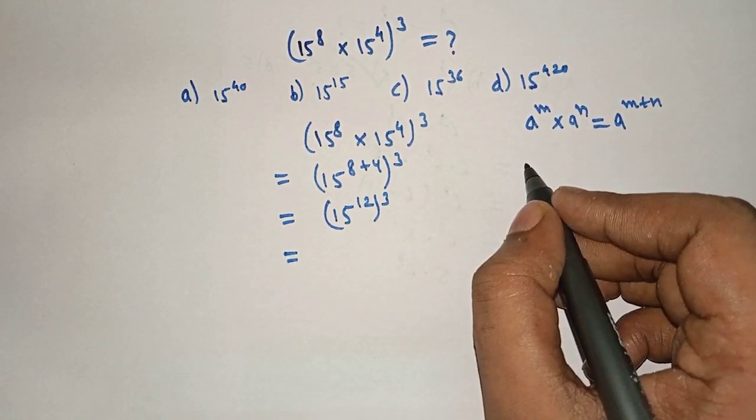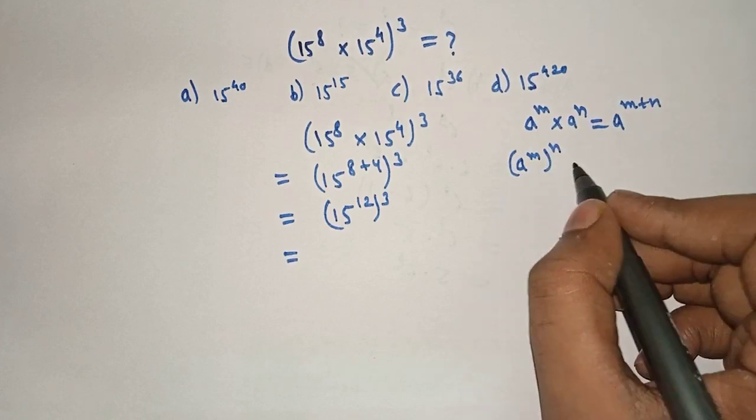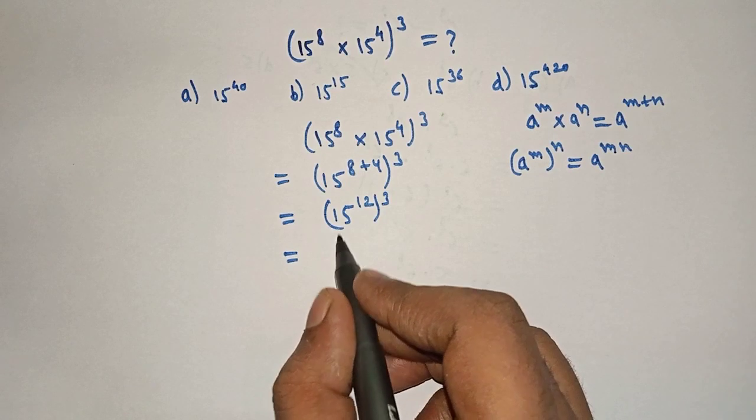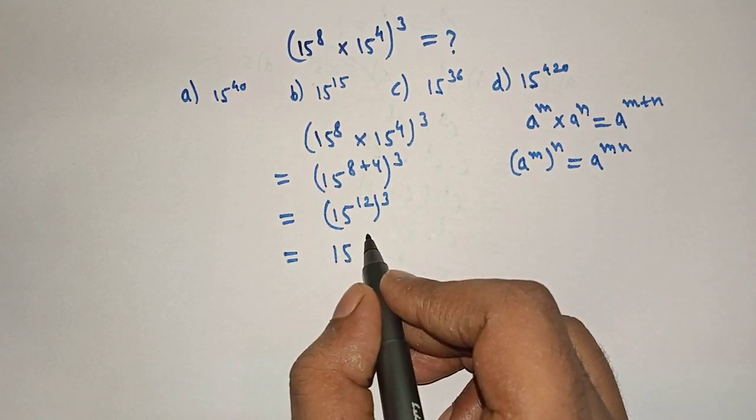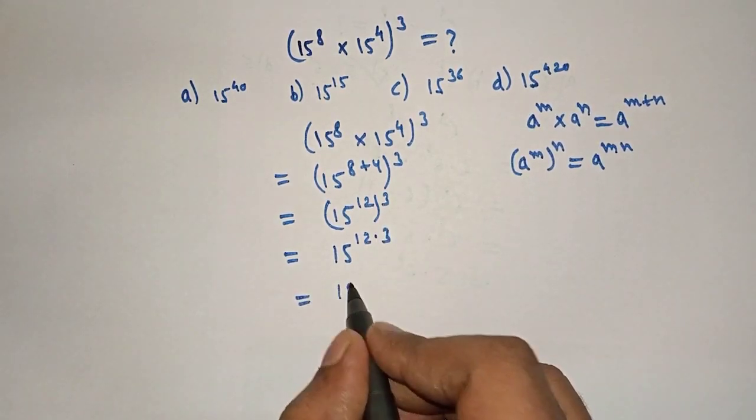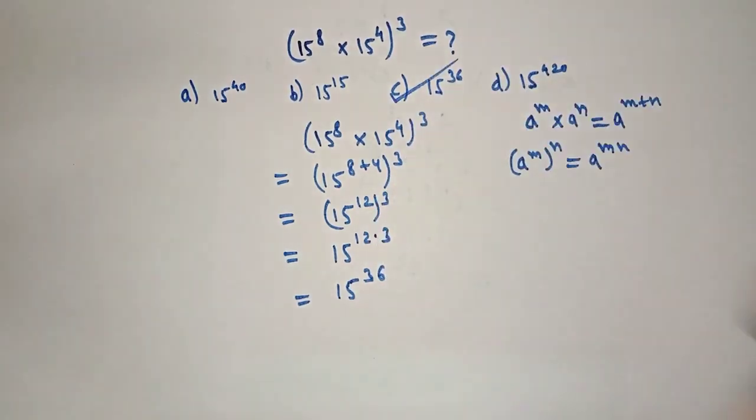There is one more rule. A raised to M, the whole raised to N can be written as A raised to M into N. Therefore, 15 raised to 12 into 3 is what? 36. Therefore, 15 raised to 36 is our right answer. Option C is our right answer.